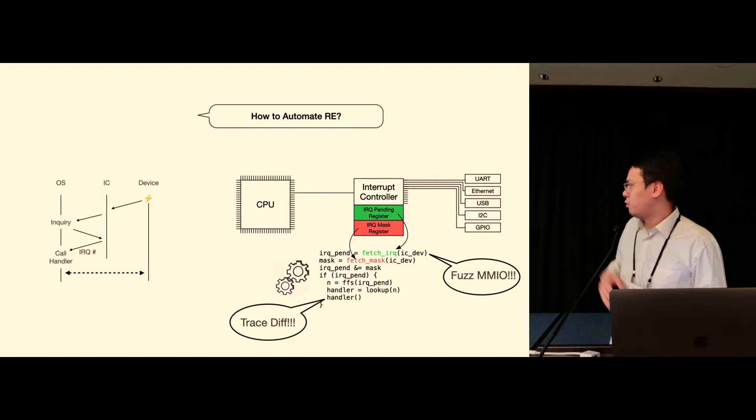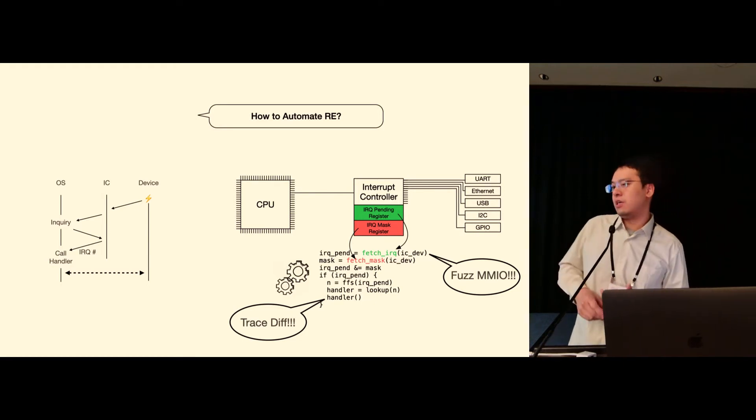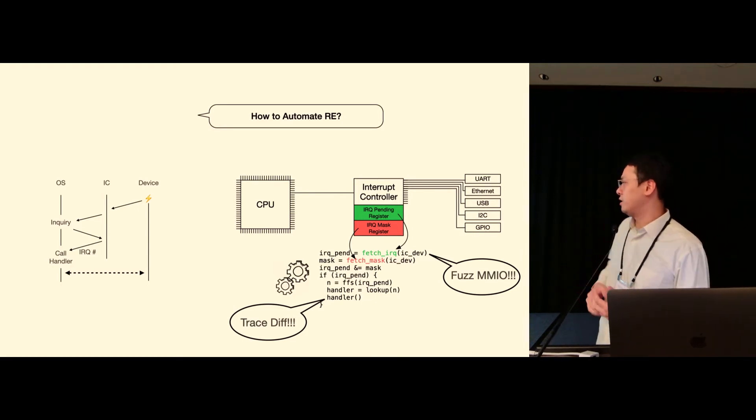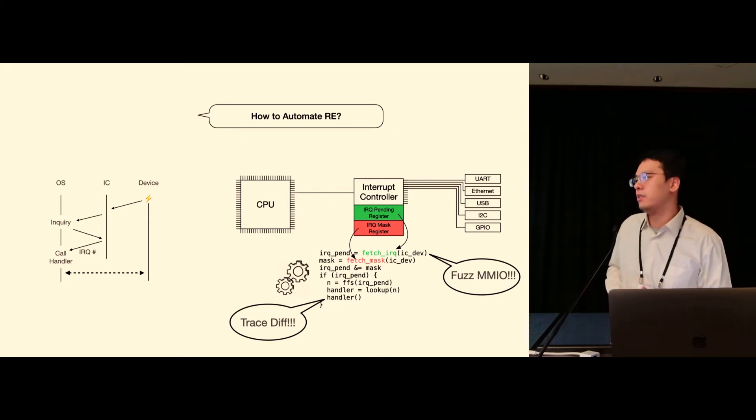Here we show an example of pseudocode of how in general an operating system would handle an incoming interrupt. We can see that it would first try to read the IRQ number from the interrupt controller and then dispatch to the correct interrupt handler.